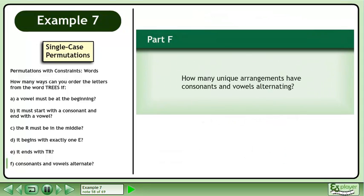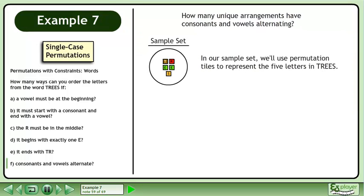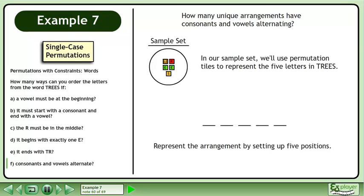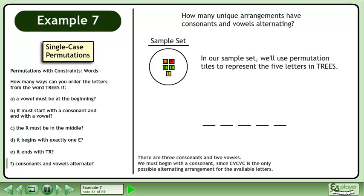In Part F, how many unique arrangements have consonants and vowels alternating? In our sample set, we'll use permutation tiles to represent the five letters in TREES. Represent the arrangement by setting up five positions. There are three consonants and two vowels. We must begin with a consonant, since CVCVC is the only possible alternating arrangement for the available letters.